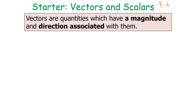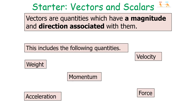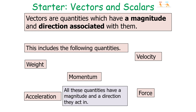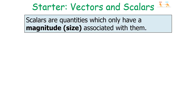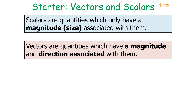Vectors are quantities which have a magnitude and a direction associated with them. This includes things like weight, momentum, velocity, force, and acceleration — all quantities that have a magnitude and a direction they act in. To recap: scalars have only a magnitude or size associated with them, whilst vectors have a magnitude and a direction associated with them.